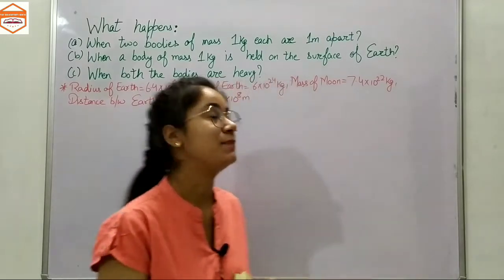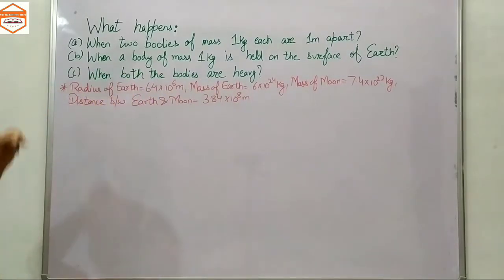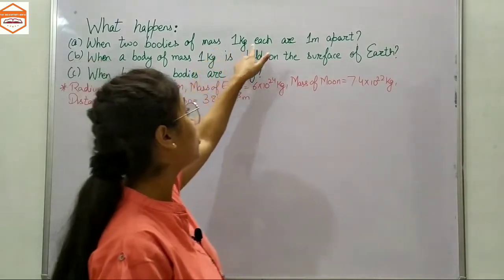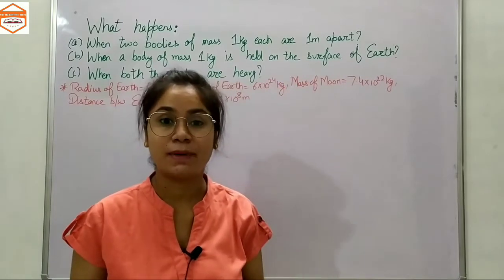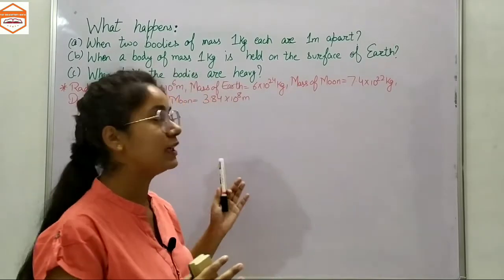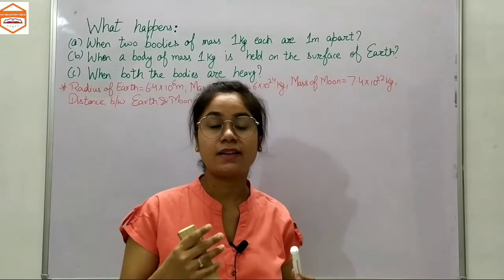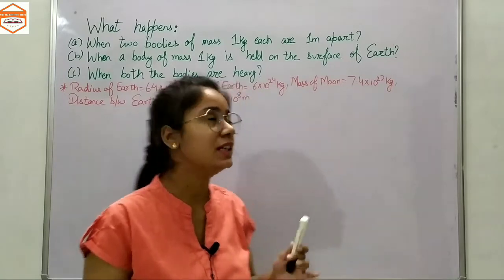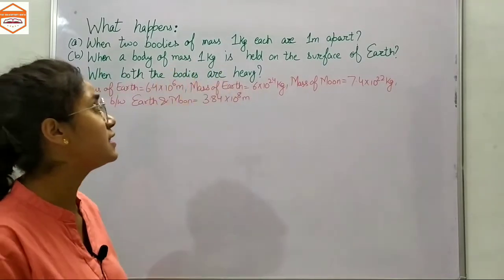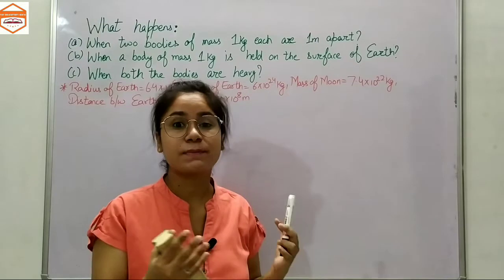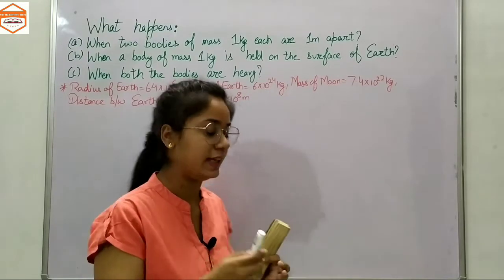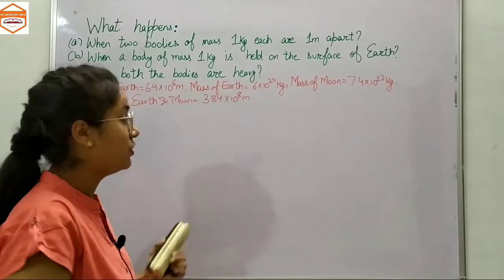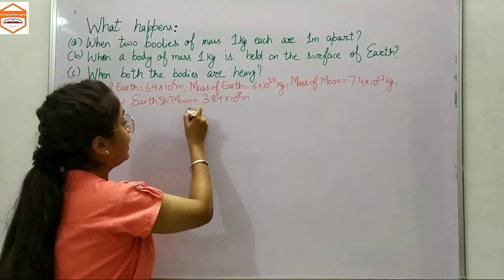In our first question, they ask: what happens when two bodies of mass one kilogram each are one meter apart? What they want to know is whether there would be any gravitational force of attraction between these two bodies whose mass is just one kilogram.